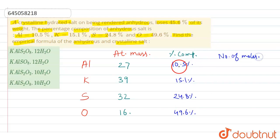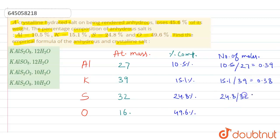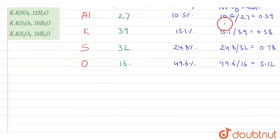From this data we will find the number of moles by dividing the given mass by the molar mass. So 10.5 ÷ 27 = 0.39, similarly 15.1 ÷ 39 = 0.38, 24.8 ÷ 32 = 0.78, and 49.6 ÷ 16 = 3.12.